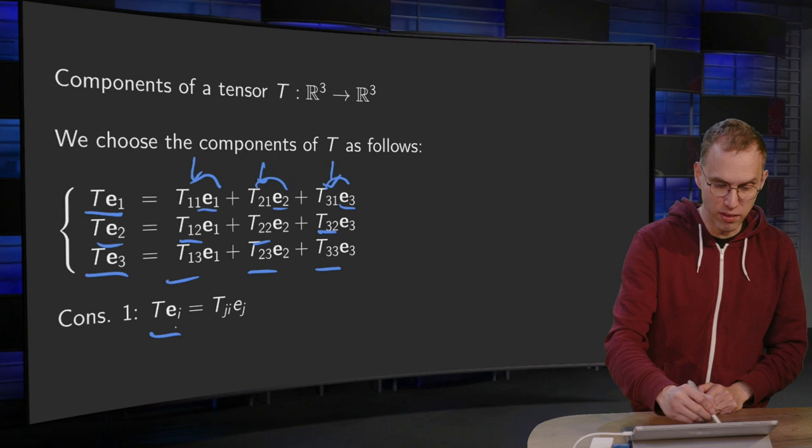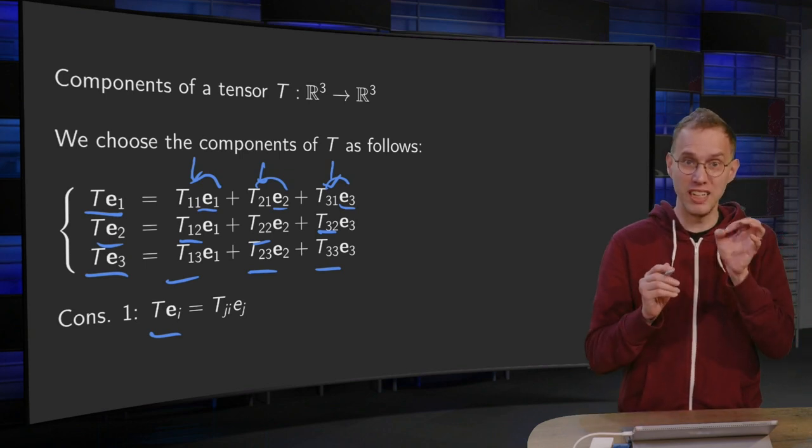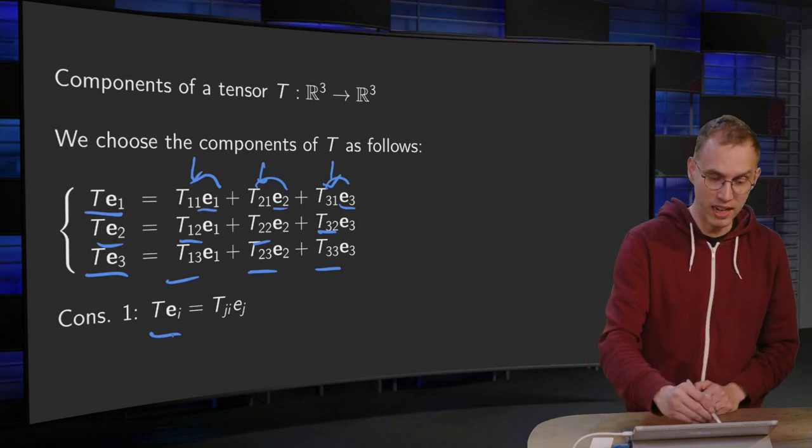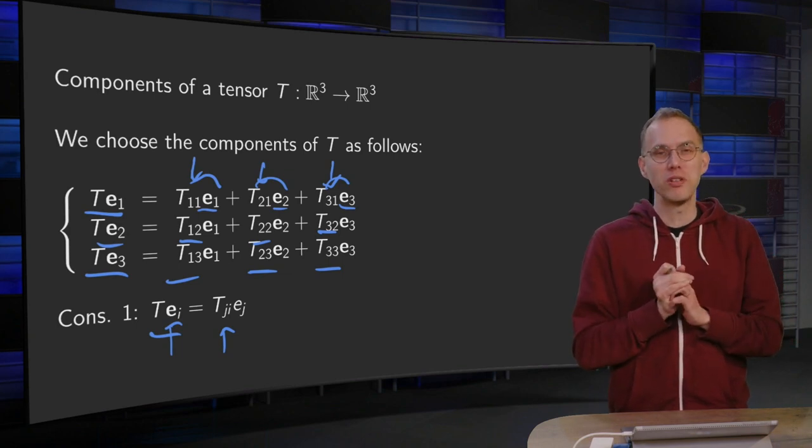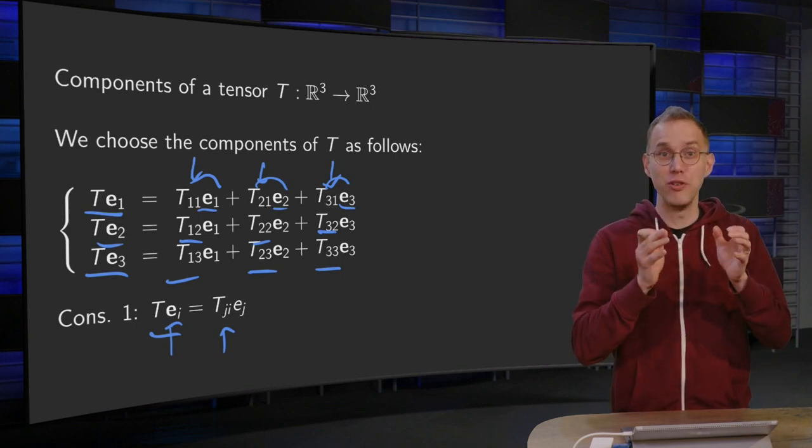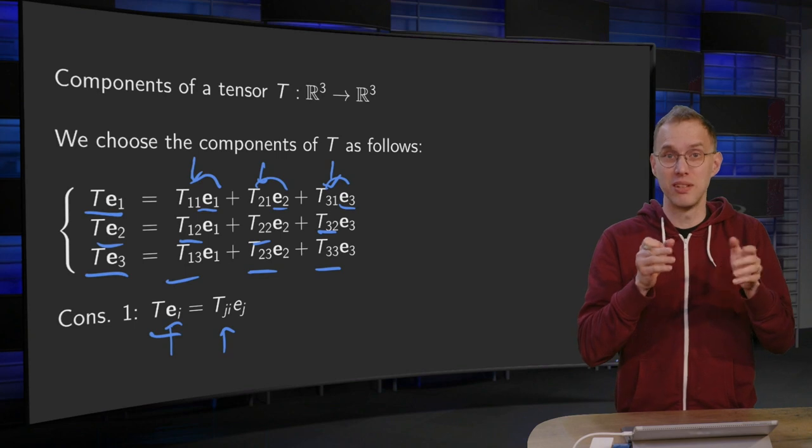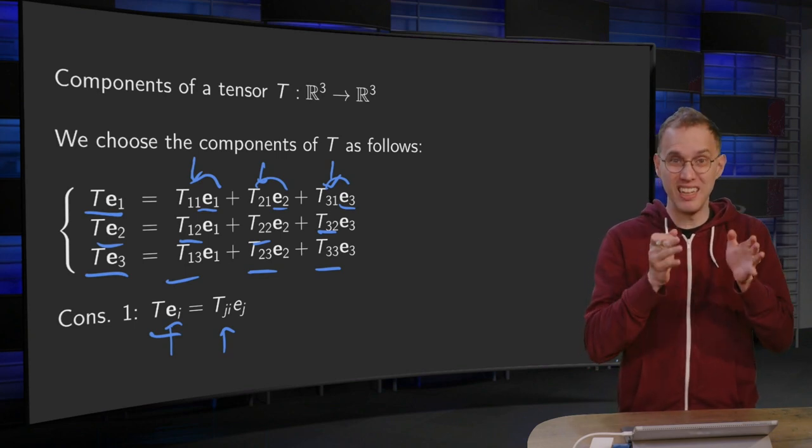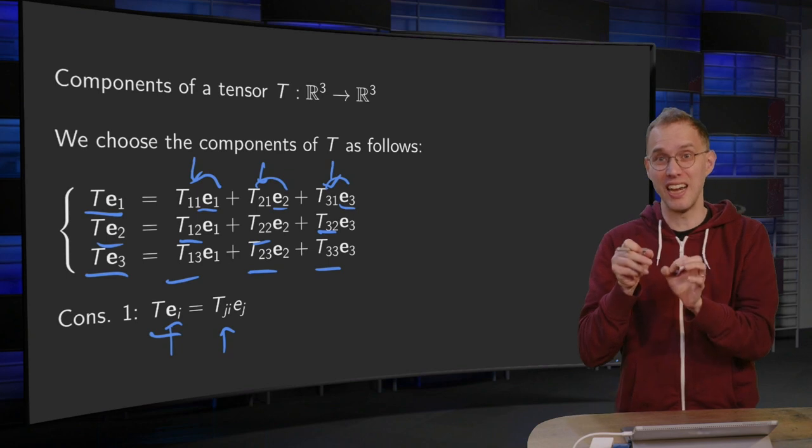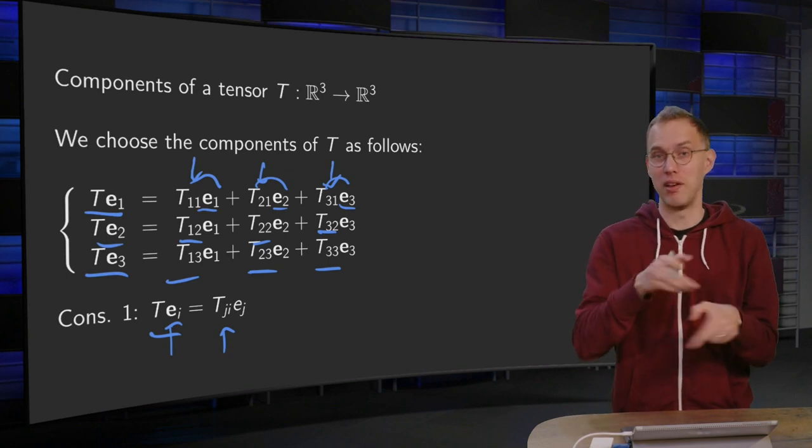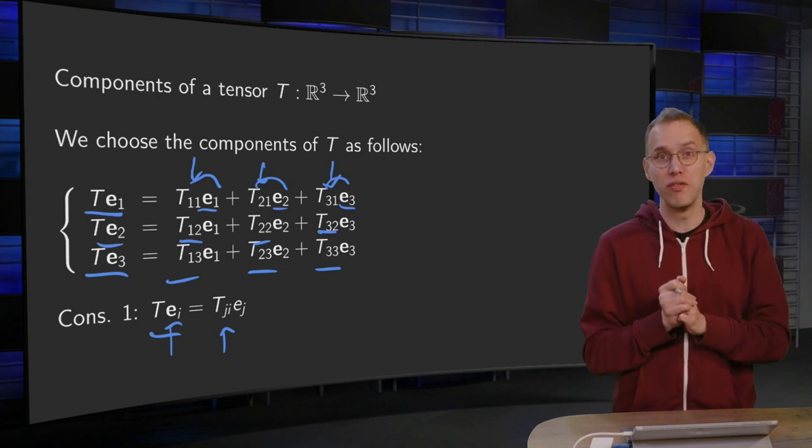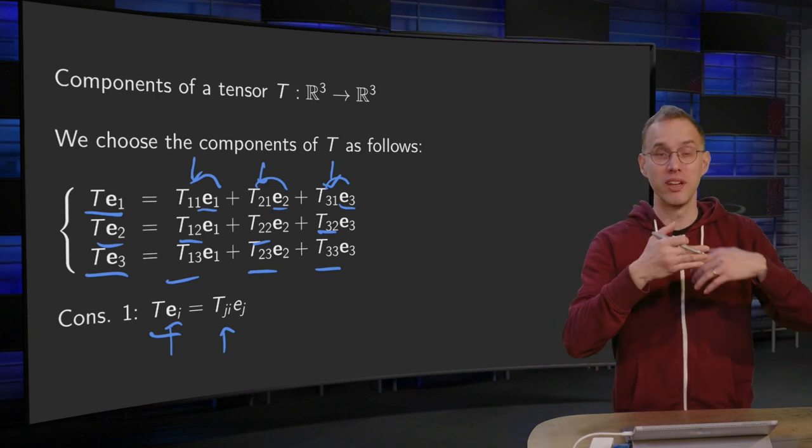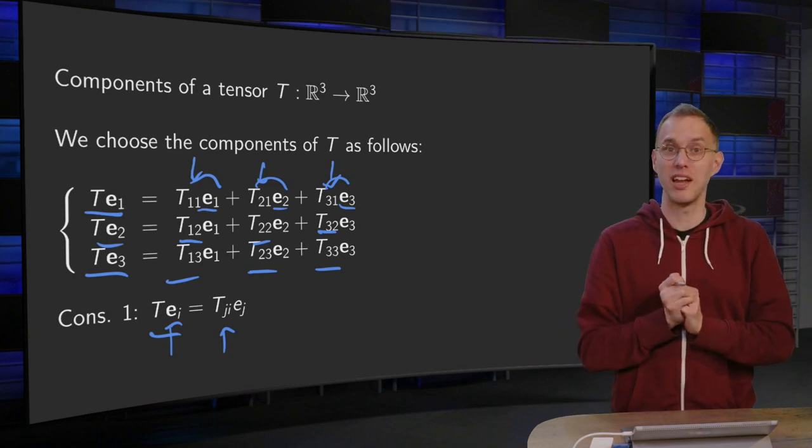So the T of E1 equals TJ1 EJ, or the T of EI equals TJI EJ. Which may look a bit odd. Why do we do it like this? Why do we choose the TIJ like this? Because now we put T of EI equals TJI EJ. Why didn't we do it the other way around? Well, we'll see that this choice is really convenient because it will give us a result we know already from linear algebra.